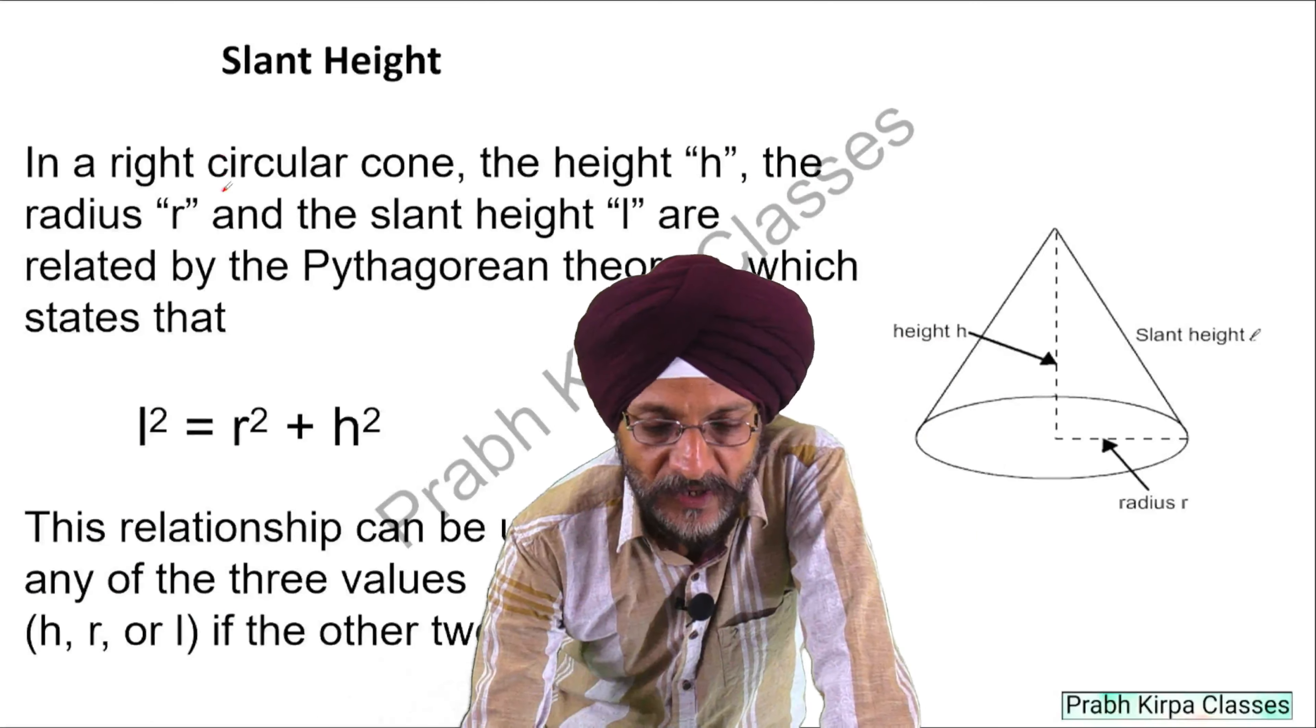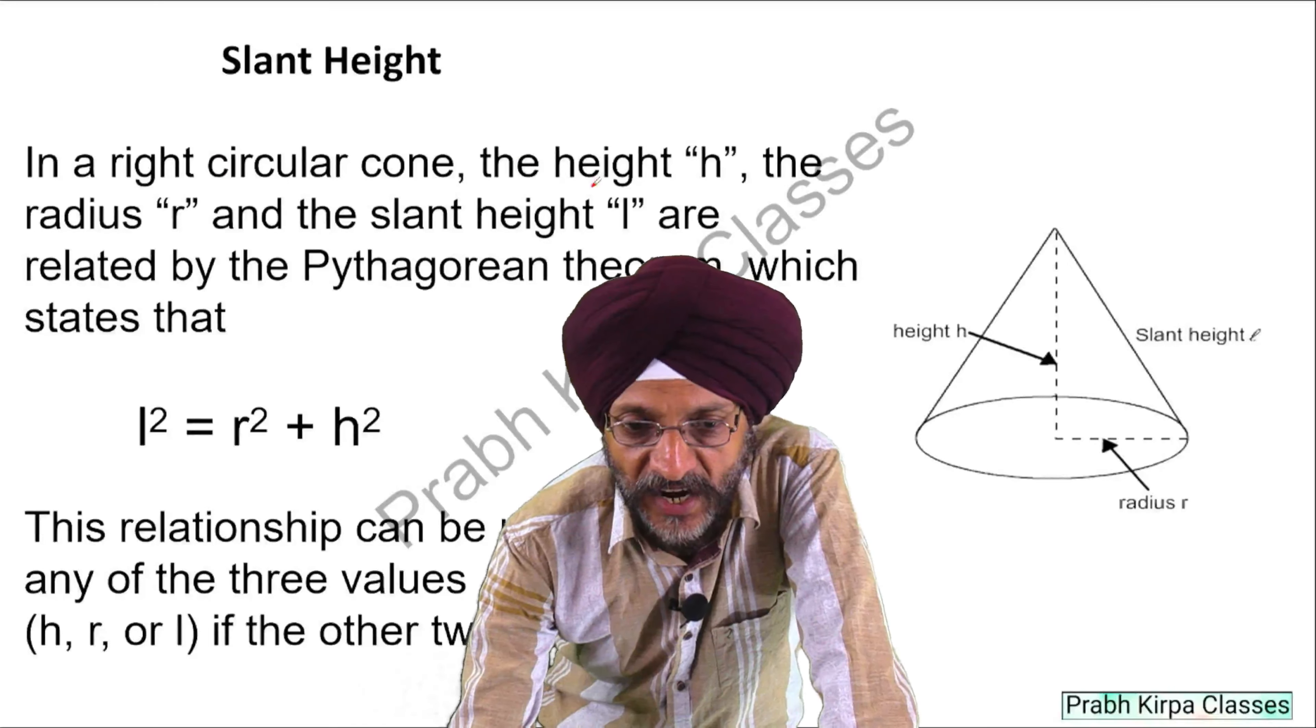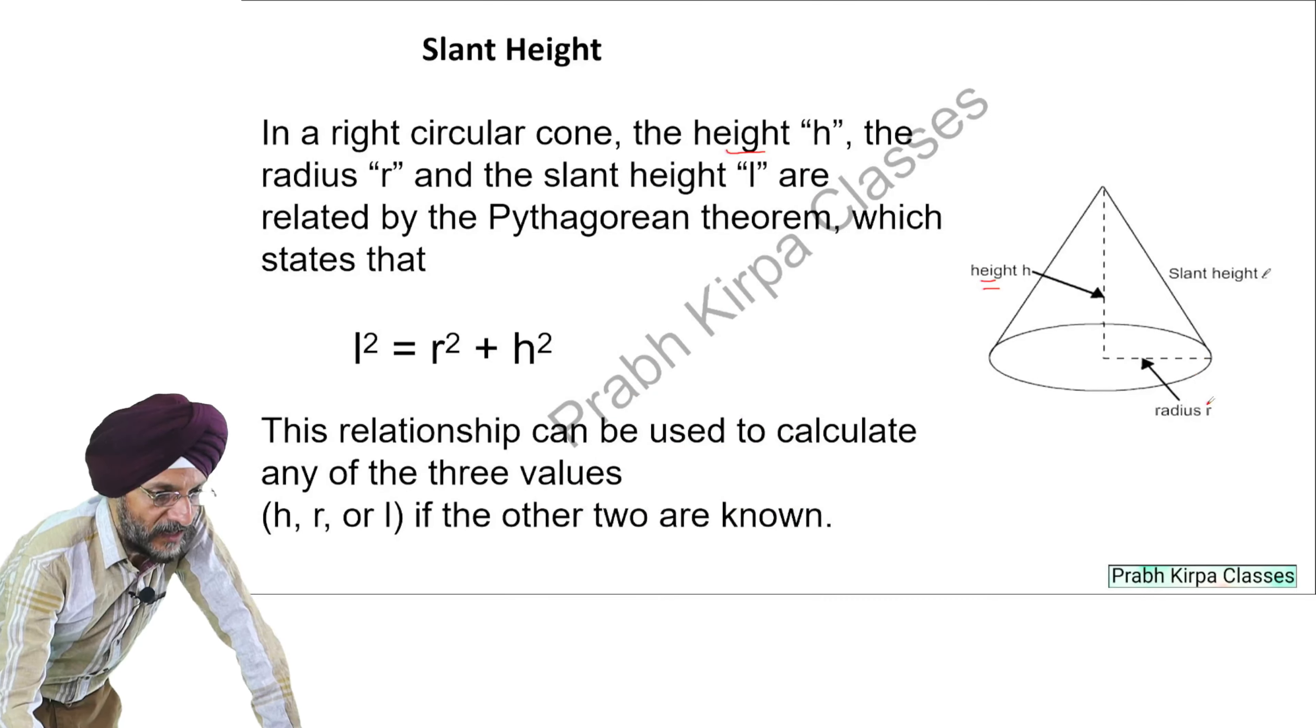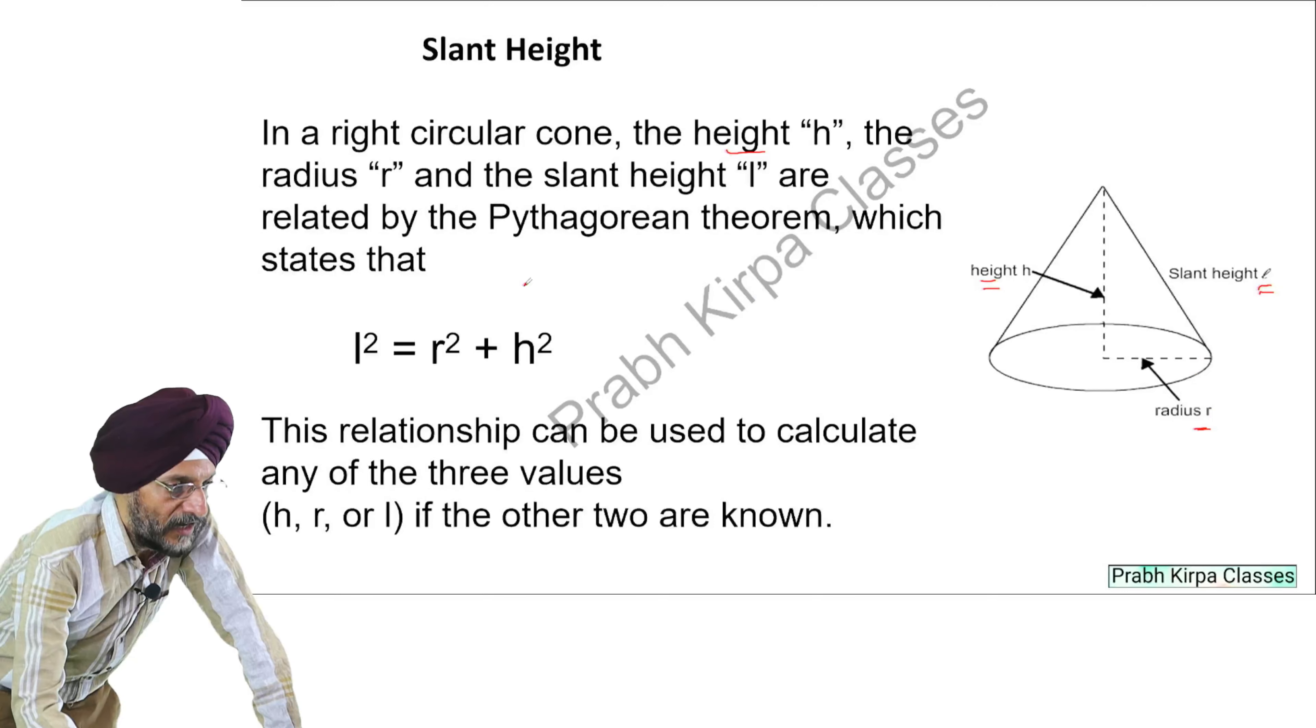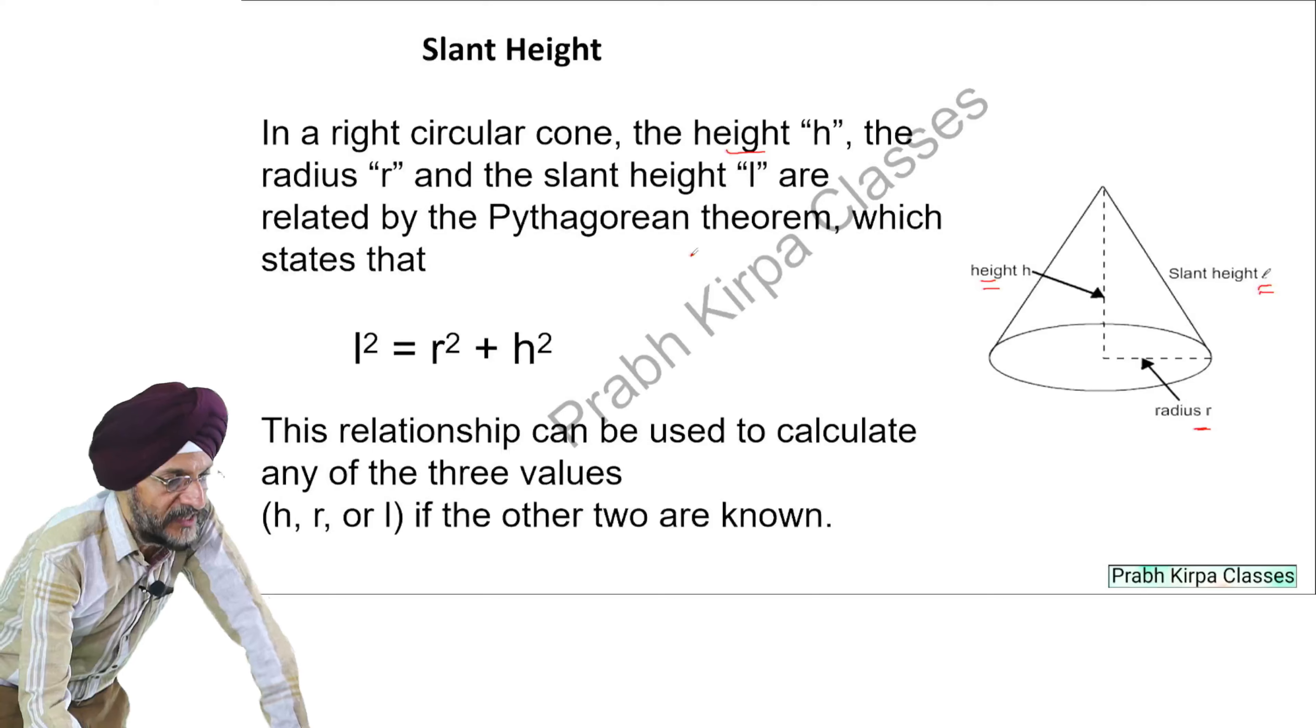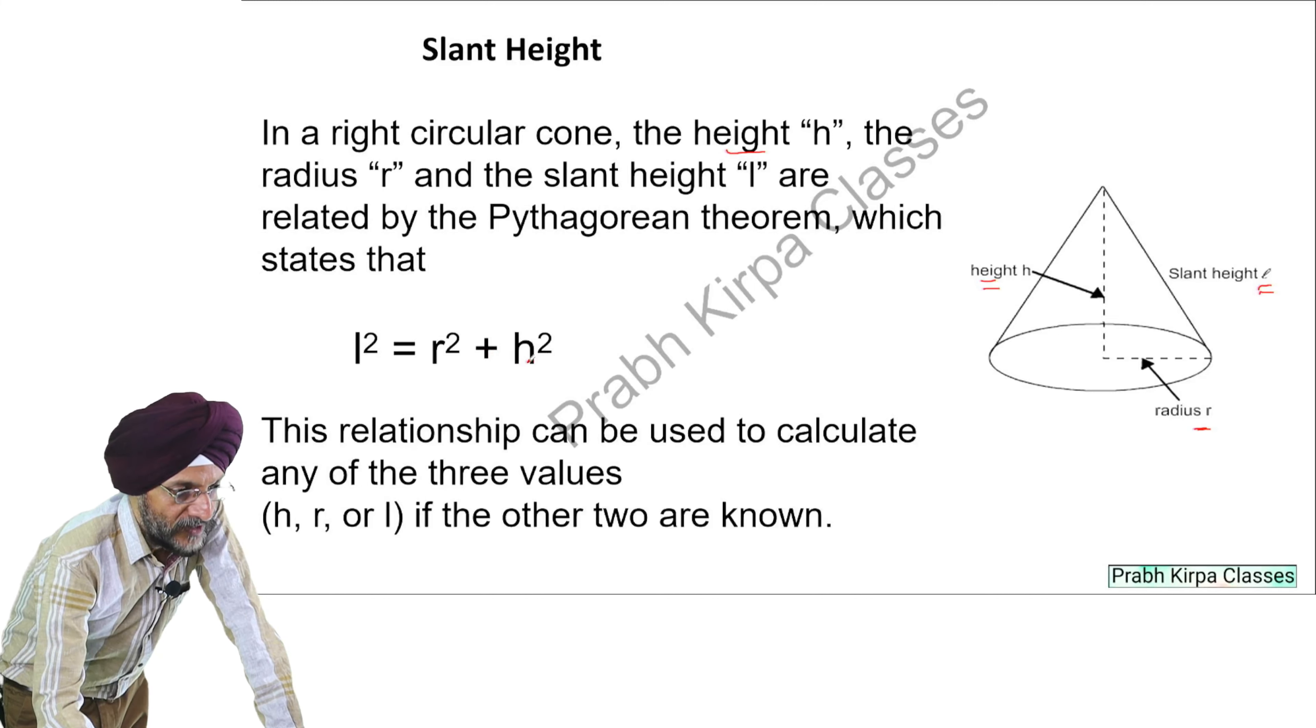We will again discuss slant height. In a right circular cone, the height H, radius R, and the slant height L are related by the Pythagorean theorem which states that L² = R² + H². This relationship can be used to calculate any of the three values if the other two are known.